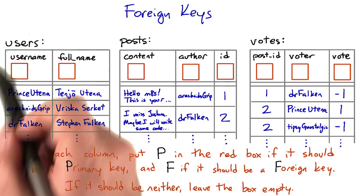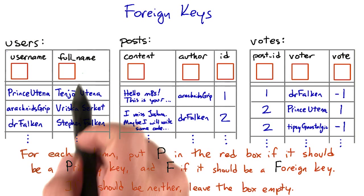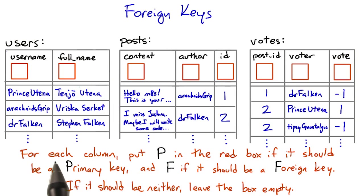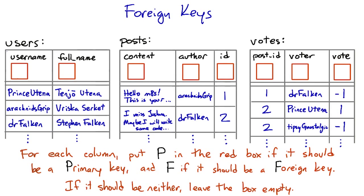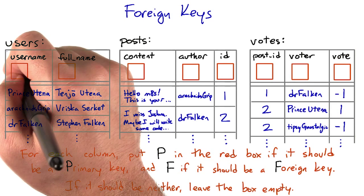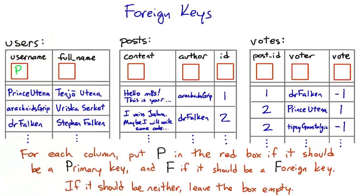First, let's look at the users table. A person's full name isn't unique, but their username on the forum should be. So that can serve as a primary key.